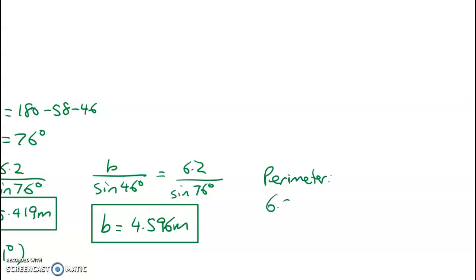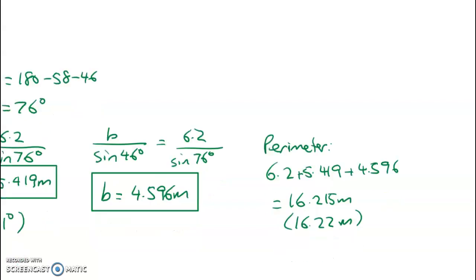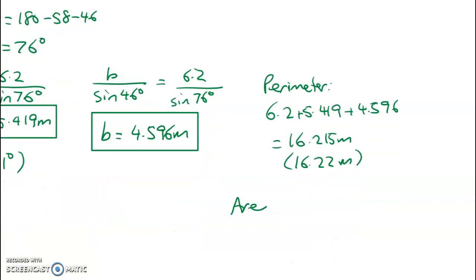So the perimeter: 6.2 plus 5.419 plus 4.596, and that equals 16.215 meters or we can round that to 16.22 meters. The area - I used 6.2 and 4.596 for my sides and the 58 degree angle for the one in between, and that gave me 12.08 meters squared.